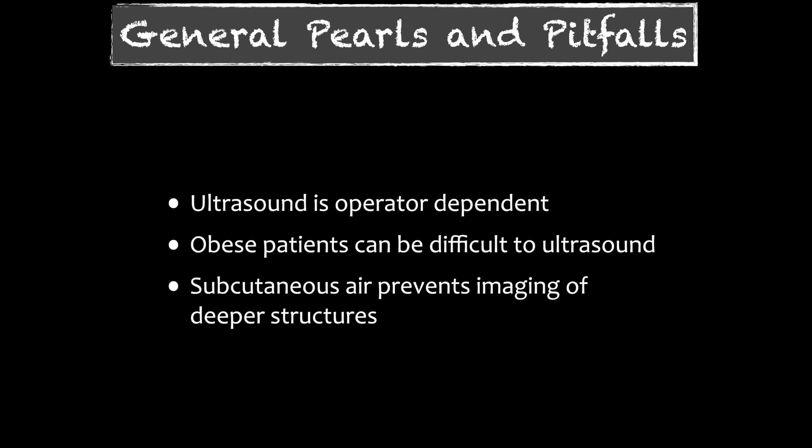These are some general pitfalls. We know that ultrasound is operator-dependent and obese patients are difficult. One additional difficulty on a FAST exam is that patients can get subcutaneous air from large pneumothoraces or airway injury, and subcutaneous air will prevent imaging of deeper structures. If you were to encounter this, you would see a hyperechoic line with an irregular appearance behind it.